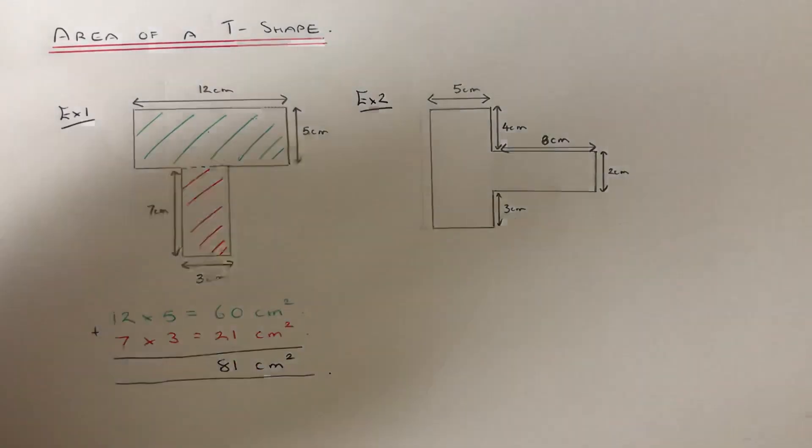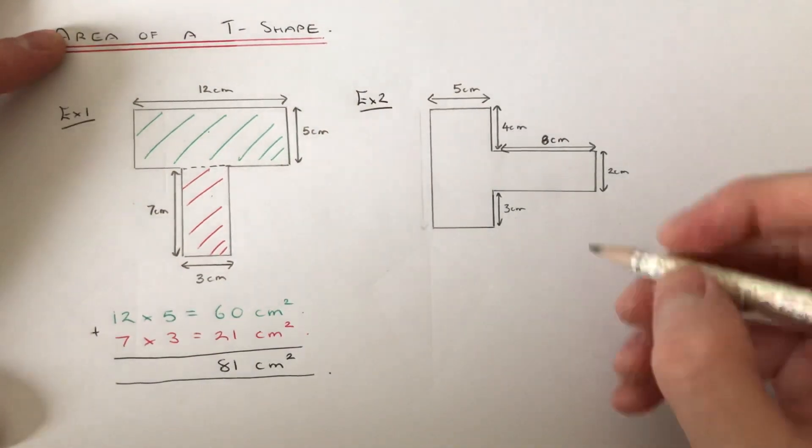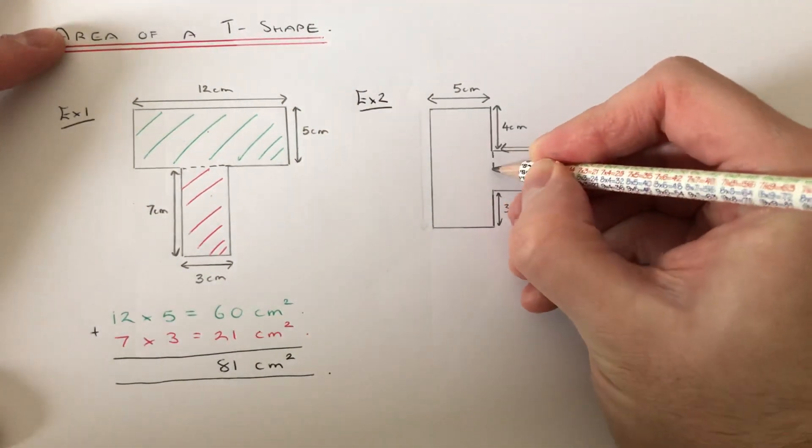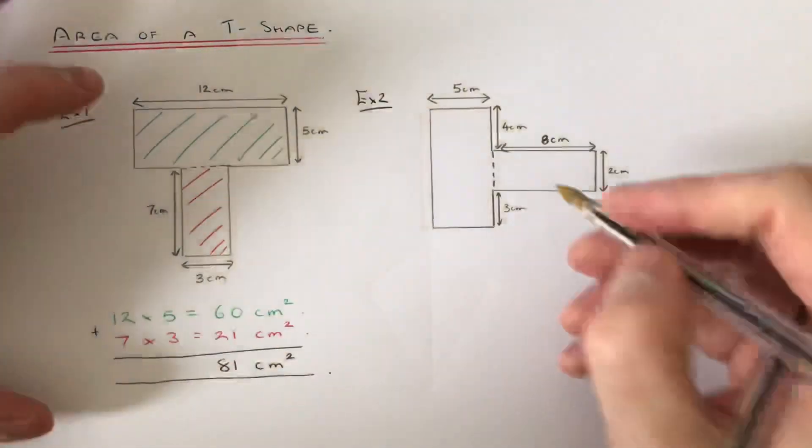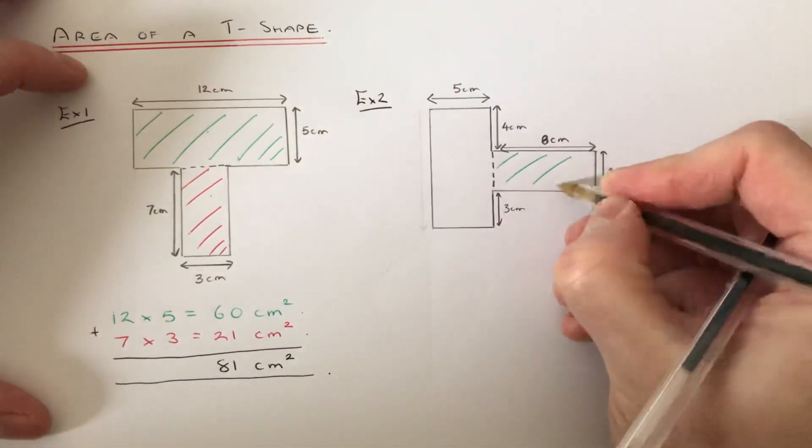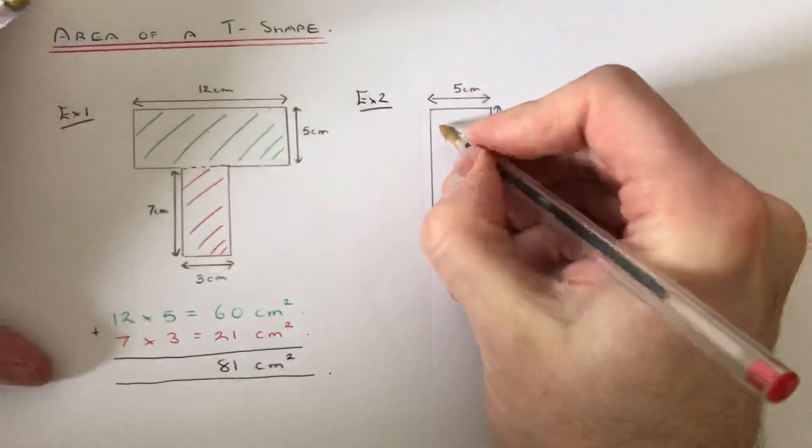So again if we split the T-shape up into two rectangles. So let's color this one in green and this one in red.